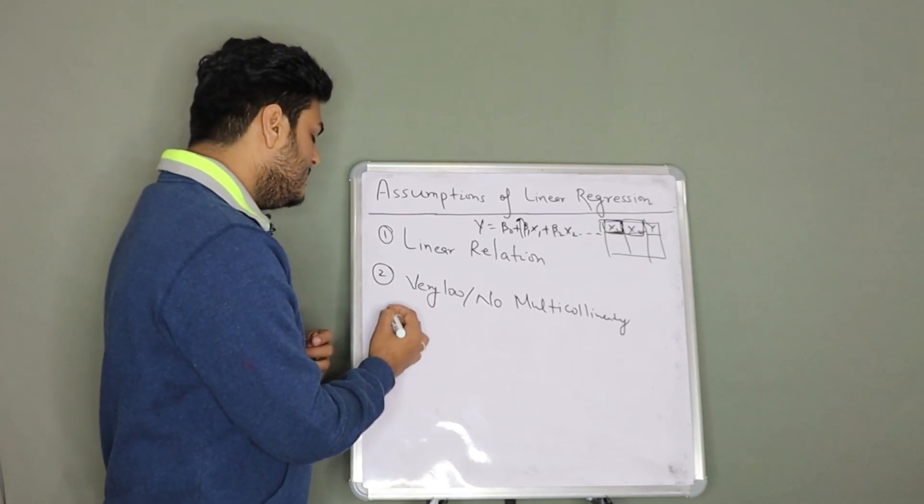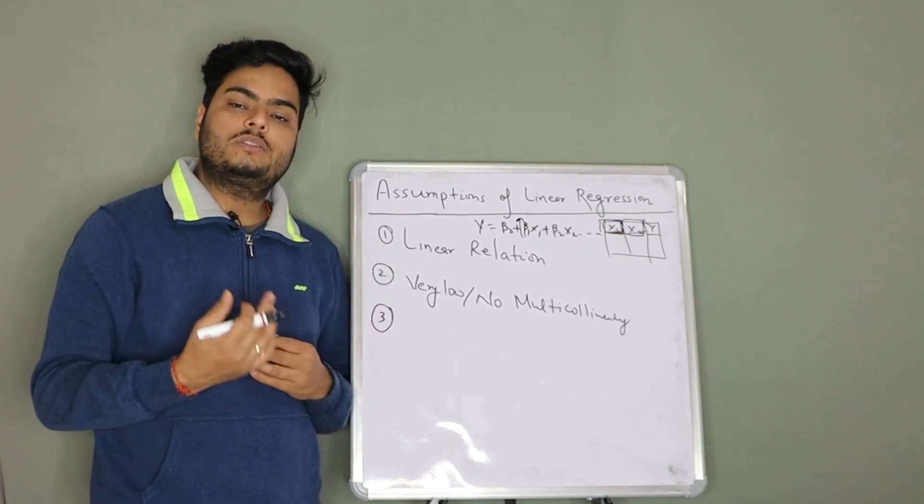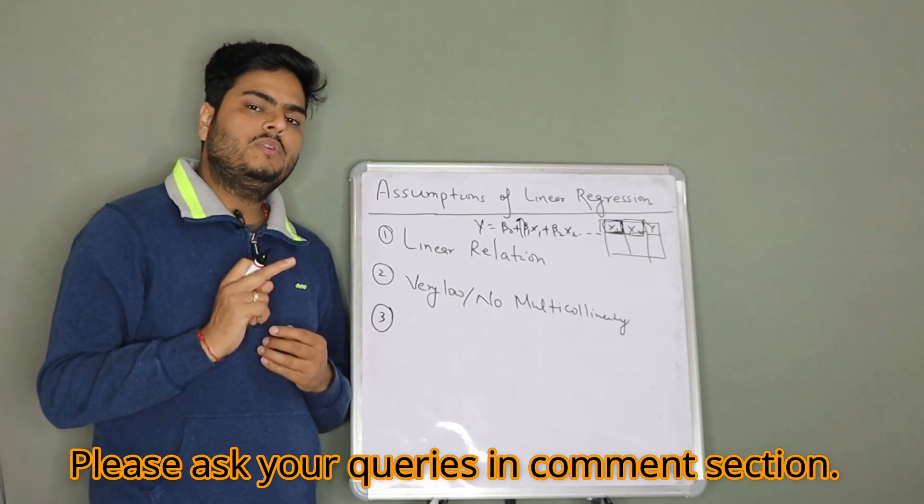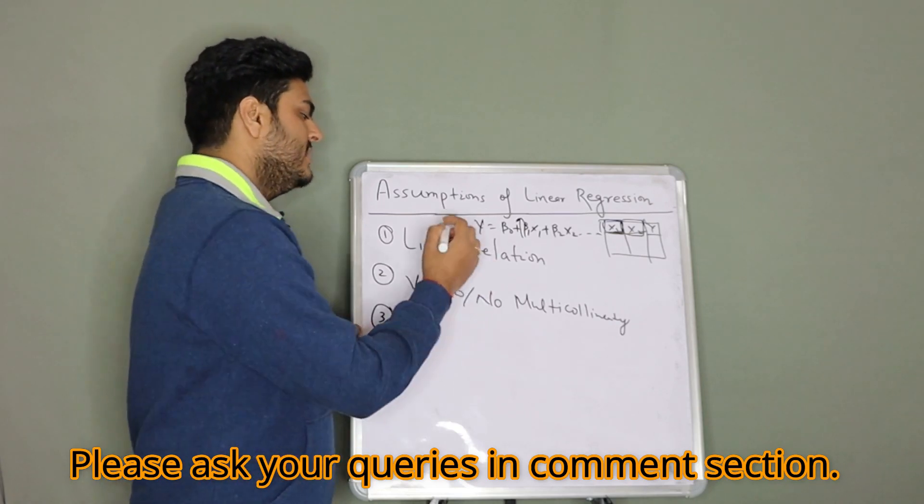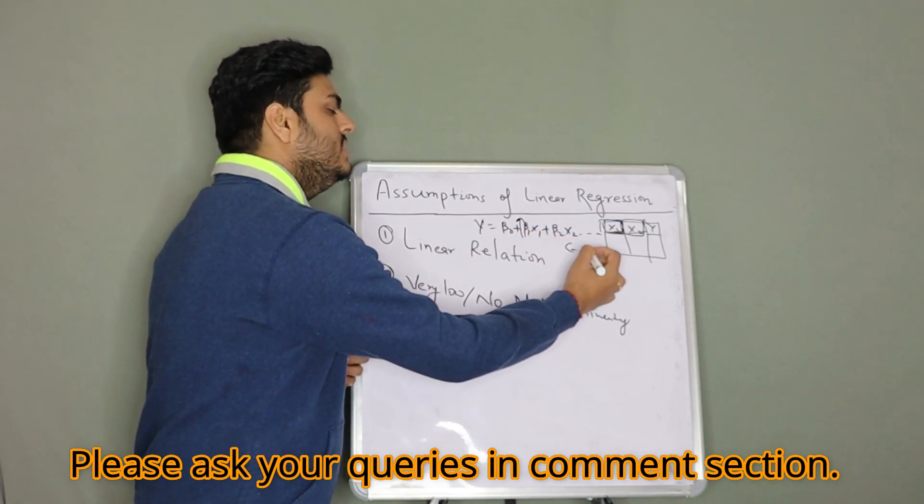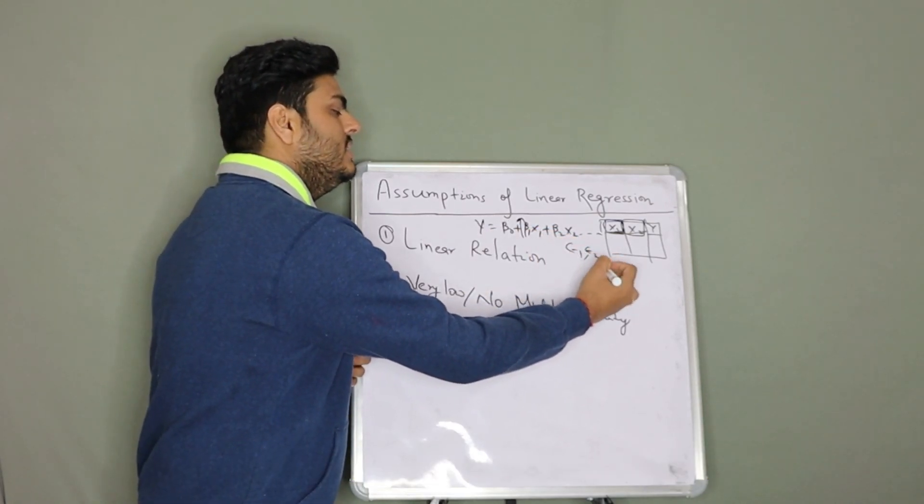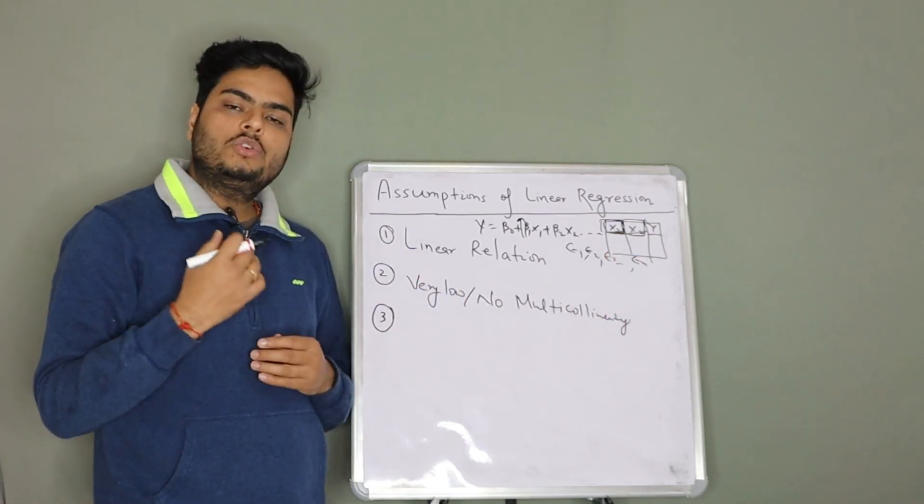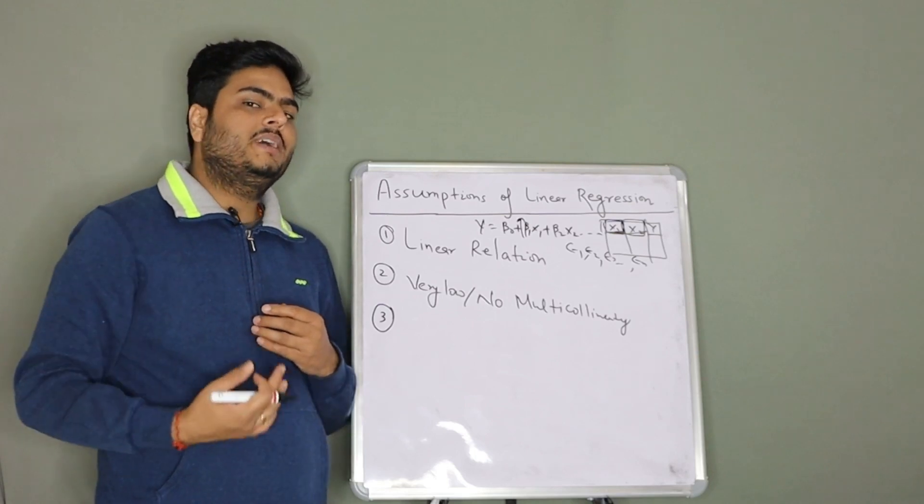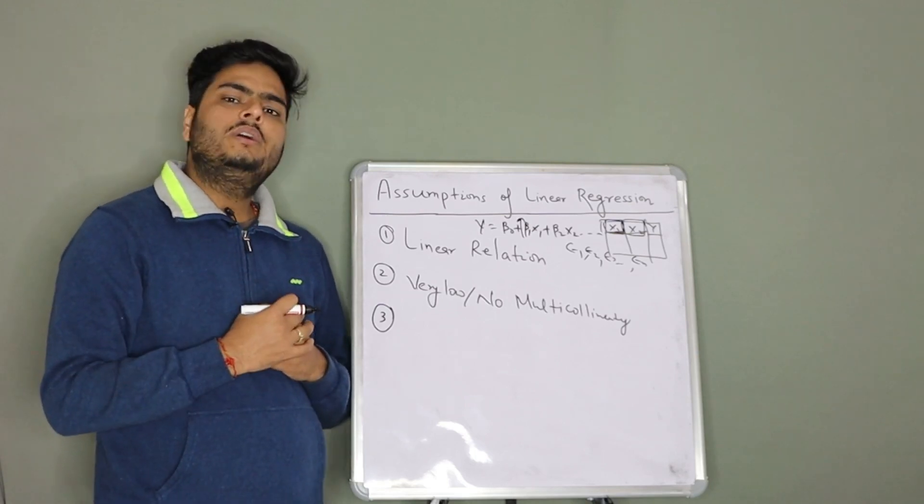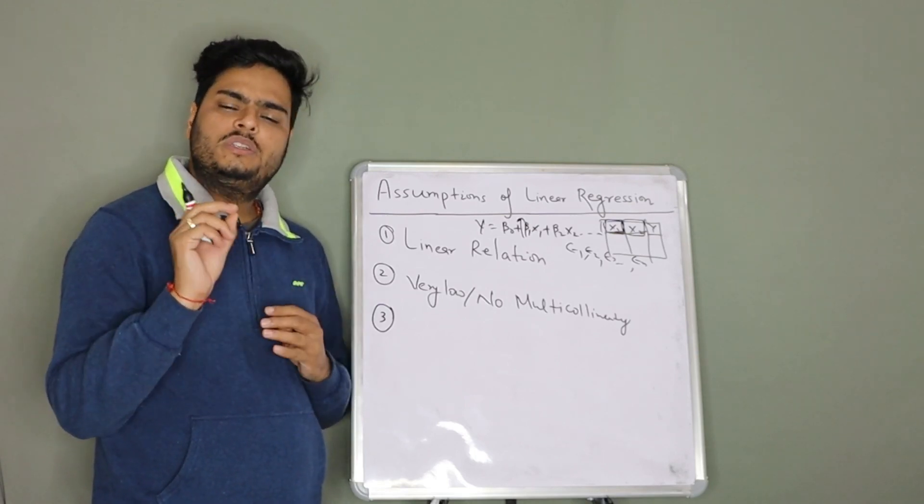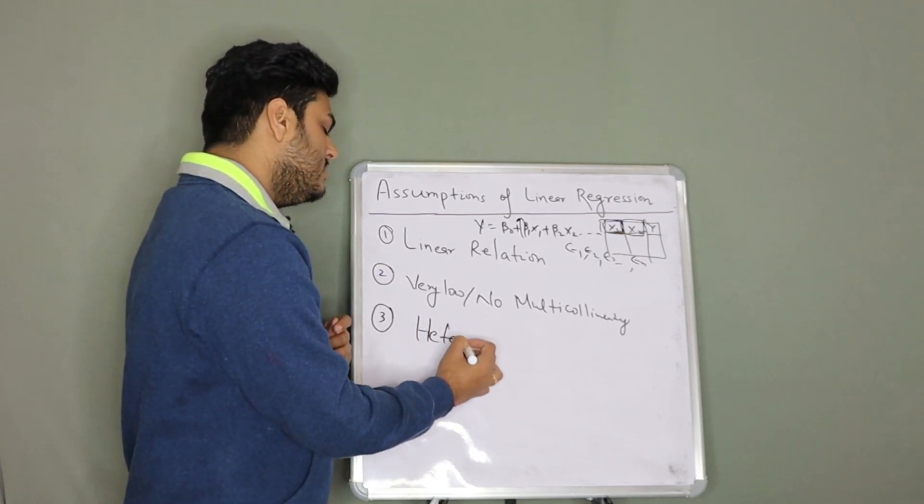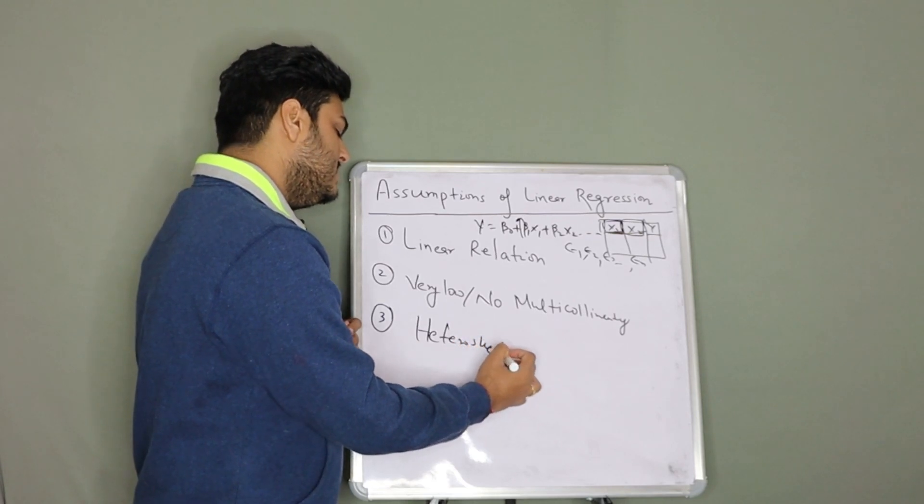Assumption number three is related to errors of your regression model. What are the errors? The difference between your actual values and predicted values, nothing but e1, e2, e3, e4, eN, these are your errors. This assumption is about those errors. What it says is there should not be heteroscedasticity in the data.